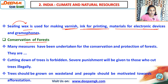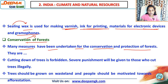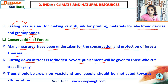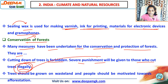Conservation of forests — how we can protect and save the forest — is also very important. Many measures have been undertaken for the conservation and protection of forests. Cutting down trees is forbidden; we cannot cut trees. Several punishments will be given to those who cut trees illegally. If you cut trees illegally, you have to face punishment decided by the government. For example, cutting bamboo is illegal — you cannot cut it without permission.